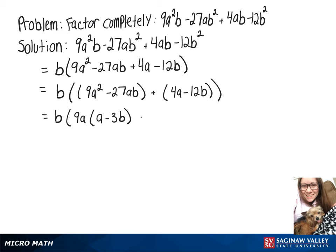In our second group, we can factor out 4 and we're left with (a - 3b) again.